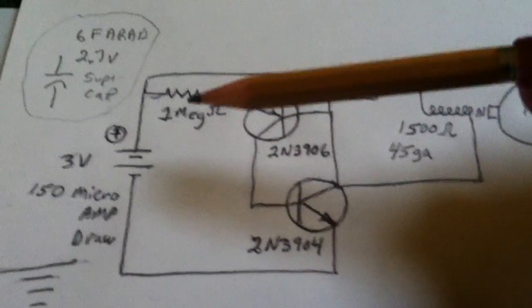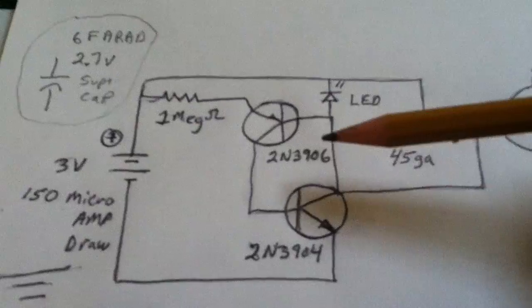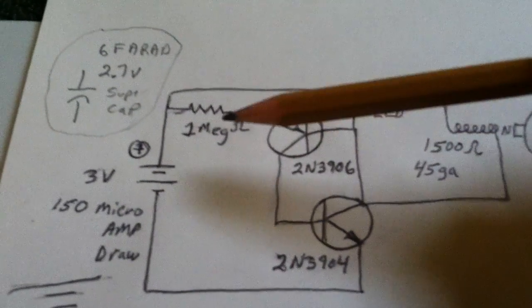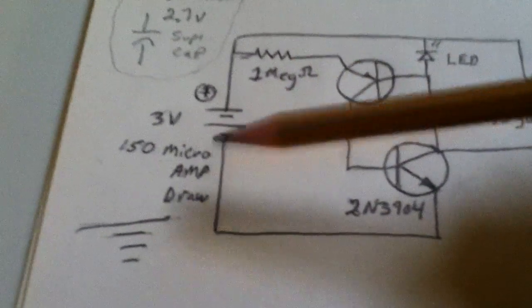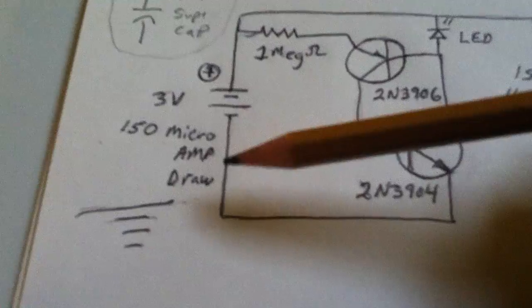Then I changed the resistance on the base of this PNP transistor to 1 mega ohm. And that's how I got this down to 150 microamp draw.